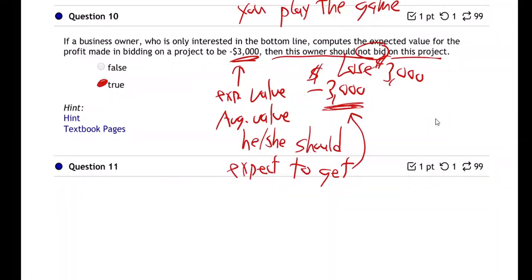Right. The owner should not bid on that project because he's going to probably lose $3,000. It might not happen, but it's likely to happen. That makes sense? That's true.